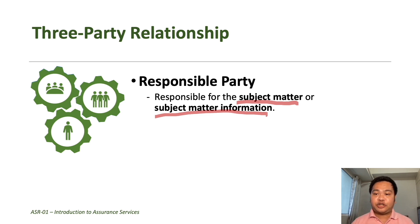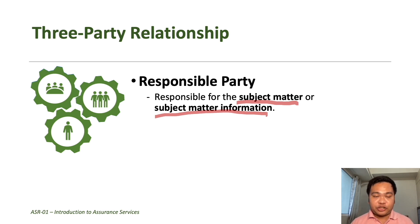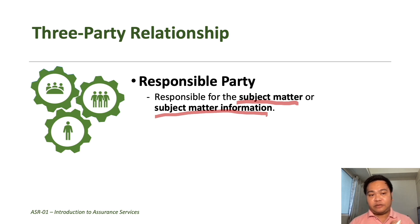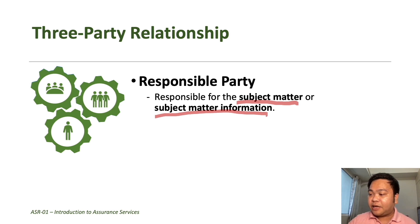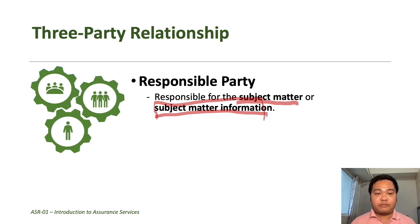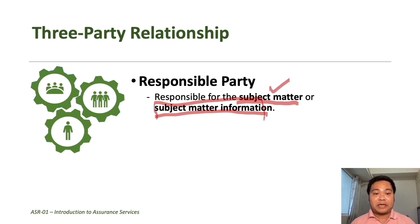We will elaborate on this distinction when we discuss the types or classification of assurance engagement according to structure. For now, remember that in an assertion-based engagement, the responsible party is responsible for the subject matter information and may also be responsible for the subject matter, while for direct reporting engagement, the responsible party is only responsible for the subject matter.